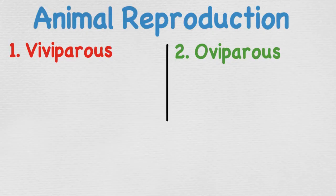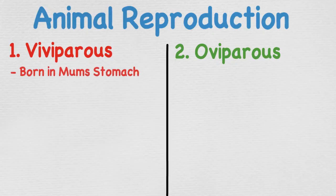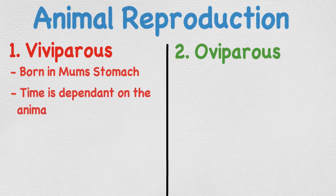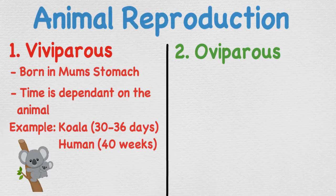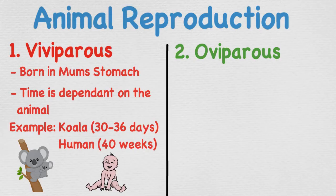Viviparous means that the animals are born from their mother's stomach — they grow inside the mother for a specific time, which is dependent on the animal, until they are ready to be born. An example is a koala, whose young grows in the mother's stomach for 30 to 36 days before being born. Humans are another example, with the young growing within the mother for 40 weeks until they are ready to be born.